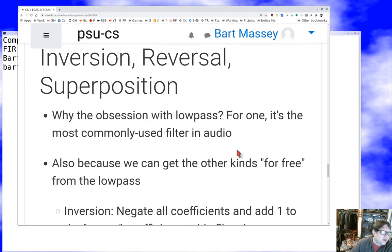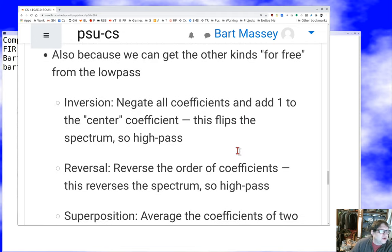Also, it turns out that if we're doing FIR filters, if we have these convolution FIR filters and we have a low-pass filter that we like, we can get the other kinds sort of for free from that design. It turns out one thing we could do is take all the coefficients and negate them. If the coefficient was five before, it's minus five now. Then add one to the center coefficient.